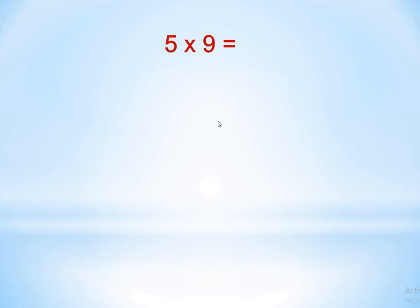Here we have 5 times 9. The 5 and 9 are called factors. How can I get the product by using some strategies? The first one is the finger trick strategy.